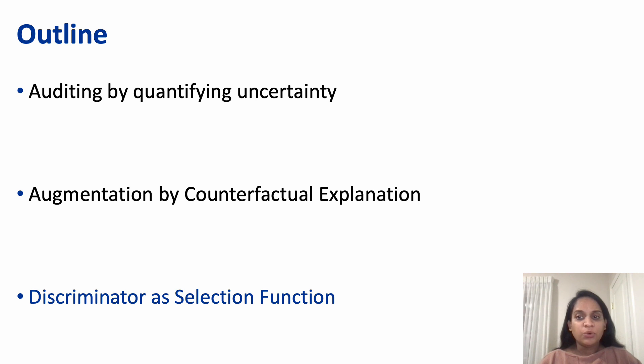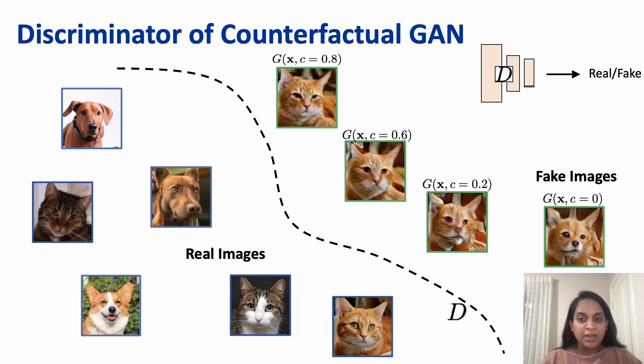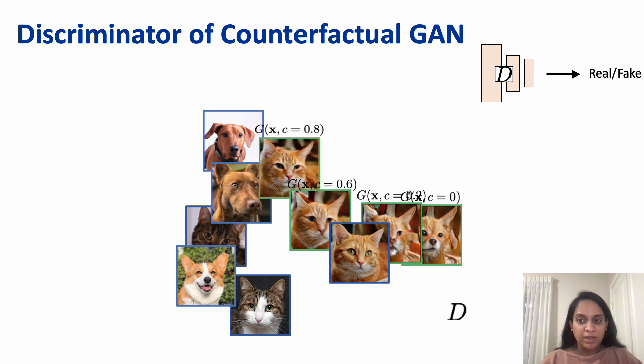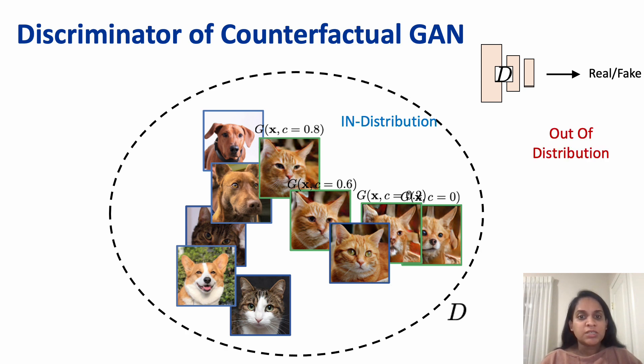To identify the far OOD samples, we use the discriminator of our conditional GAN. The discriminator is trained to separate real in-distribution images from fake images created by the generator. On convergence of GAN training, the discriminator fails to separate real from fake and thus provides us with a useful tool to identify in versus out distribution.